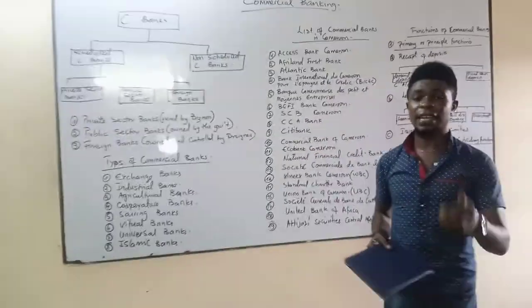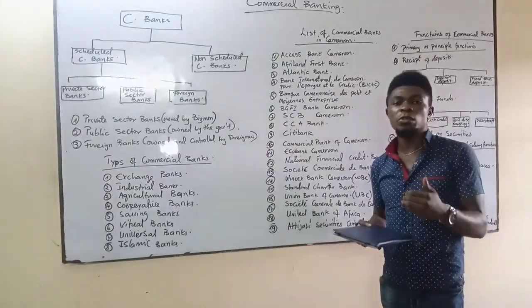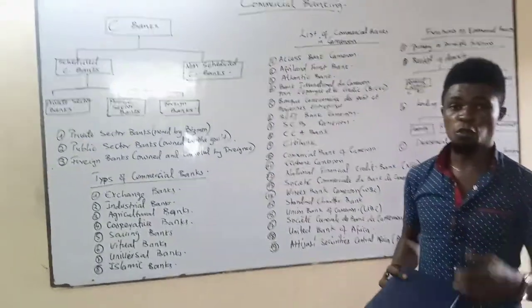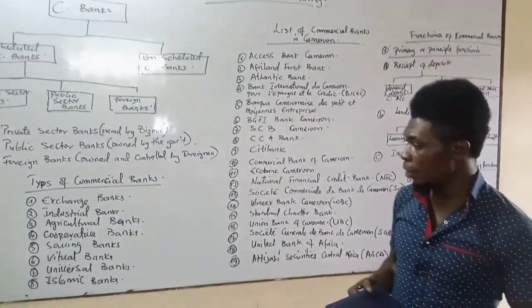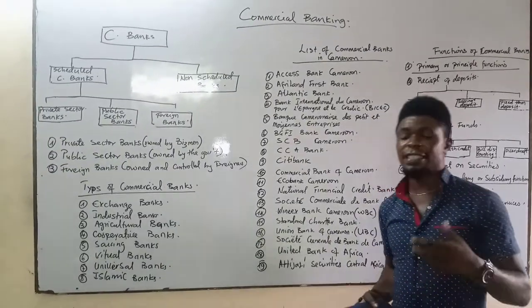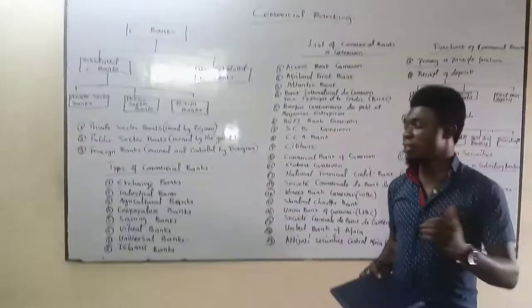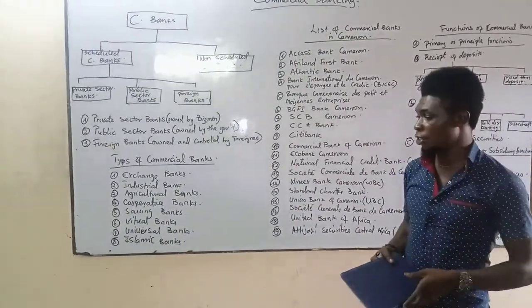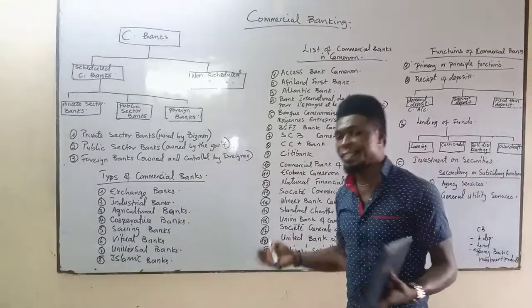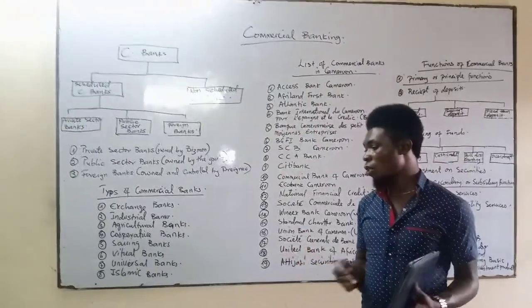We have savings banks — banks that are there to encourage saving, to help those who have money but cannot save on their own. These banks encourage minimal savings, mobilize savings, and give them out as loans to others. We also have virtual banks, which are banks that offer their services electronically using electronic gadgets to serve the public. And we have universal banks, which offer a wide range of services online.